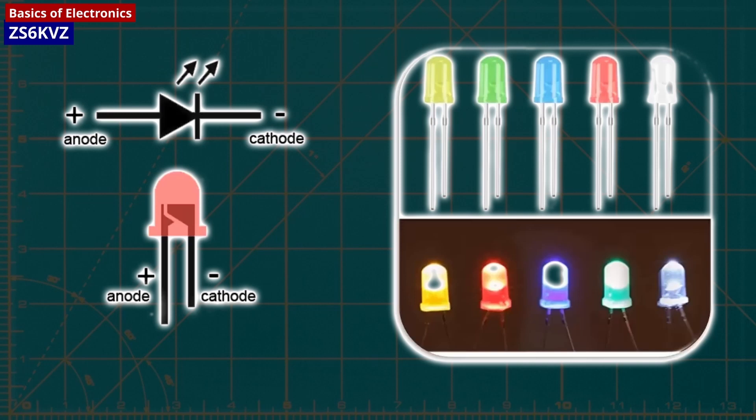They have two indicators to show the direction of electricity, a longer positive lead (anode) and a shorter ground lead (cathode). The other indicator is a flat notch on the side of the LED to indicate the positive anode lead.